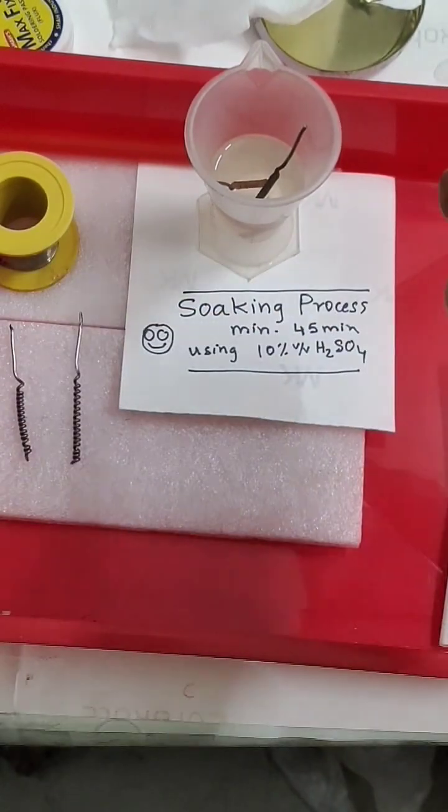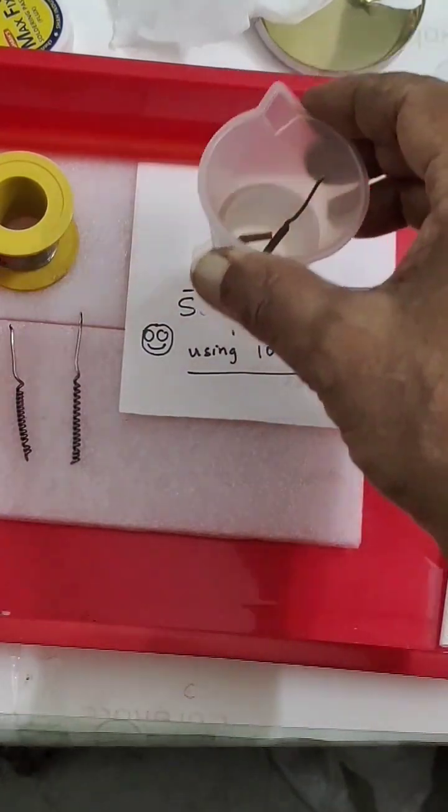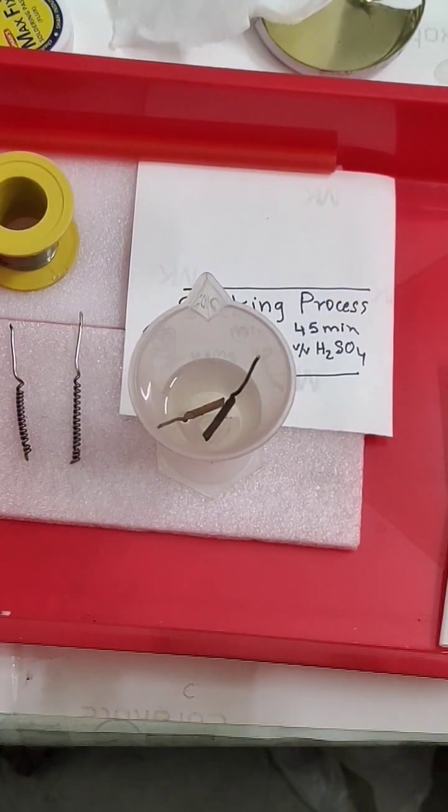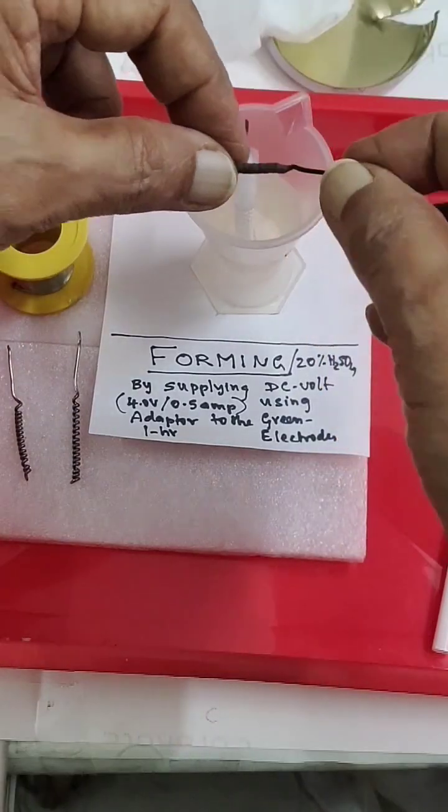Then I will supply outside DC voltage, 4 volts to the same tub I will supply, but here the electrode now will be 20% sulfuric acid instead of 10. I will remove and replace with 20% sulfuric acid. I will assemble and show you.